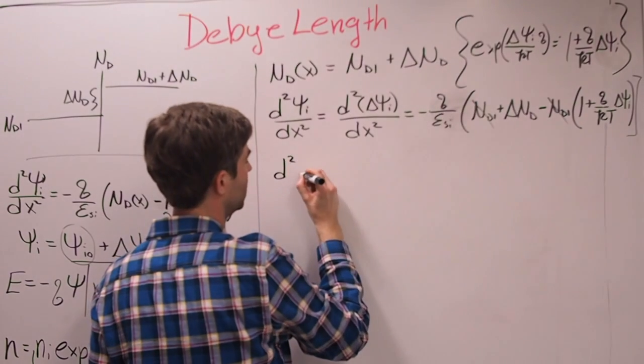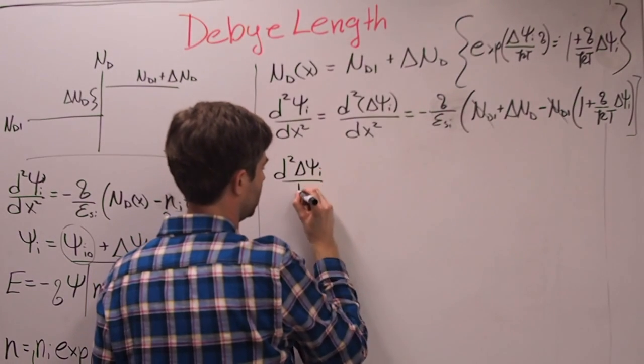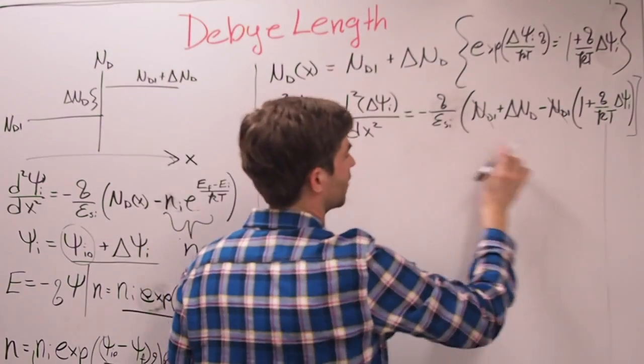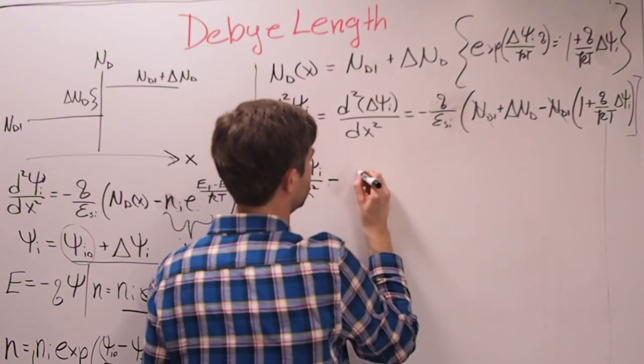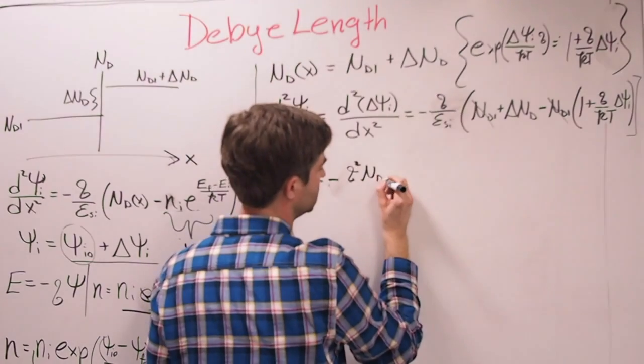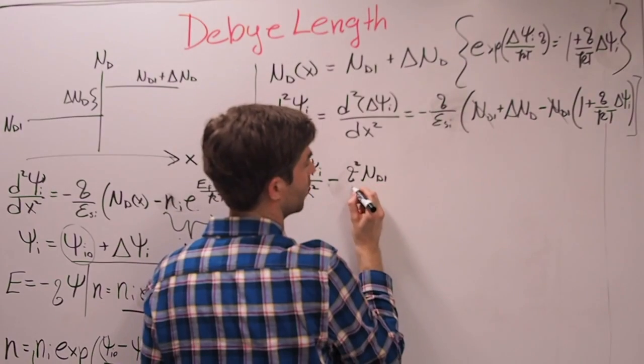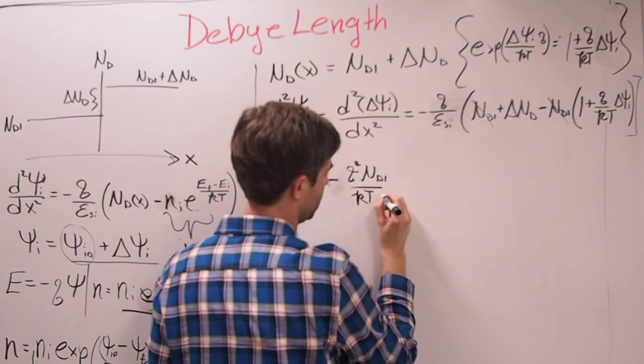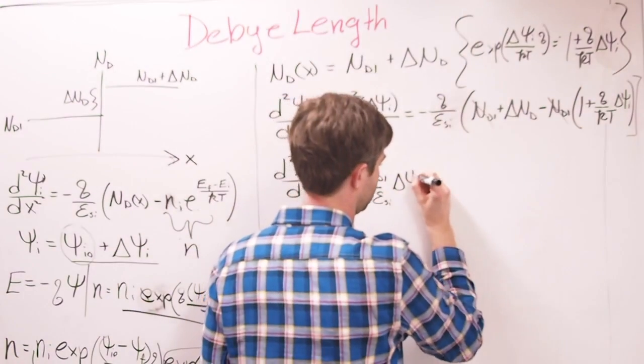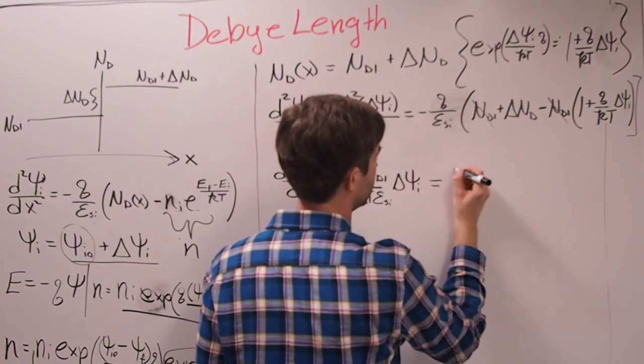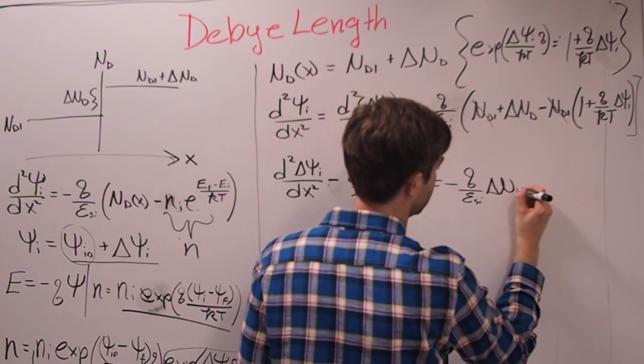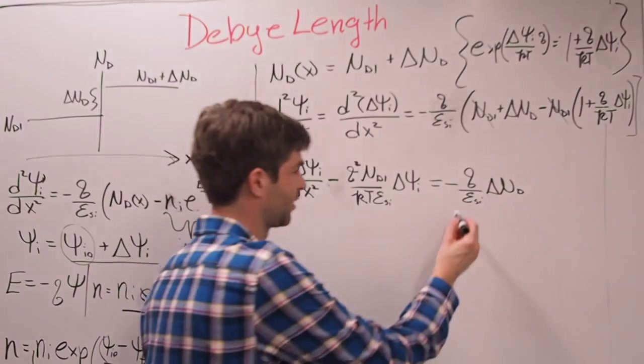I'm going to bring this over here, to negative Q squared Nd1 over KT epsilon SI, permittivity of silicon right there, delta phi I, which is equal to Q over epsilon SI delta Nd.